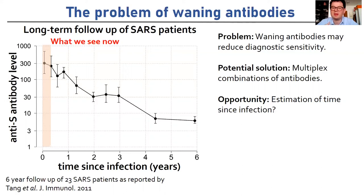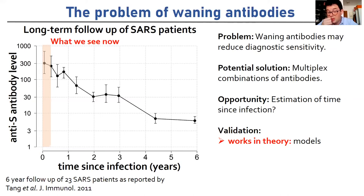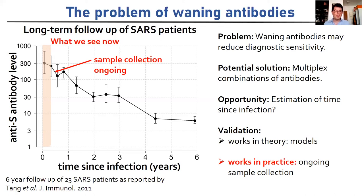Our hypothesis is that by using multiplex combinations of antibodies, this can provide a potential solution to the waning antibody problem. It may also give an opportunity to estimate time since infection — not just 'were you infected yes or no,' but whether you were infected three months ago, last year, or two years ago. We have validated this in theory by applying mathematical models of antibody kinetics to look at how antibody levels change over time. But this isn't a high enough standard of evidence, so we're also working to show it works in practice, collecting thousands of samples from individuals followed up longitudinally.